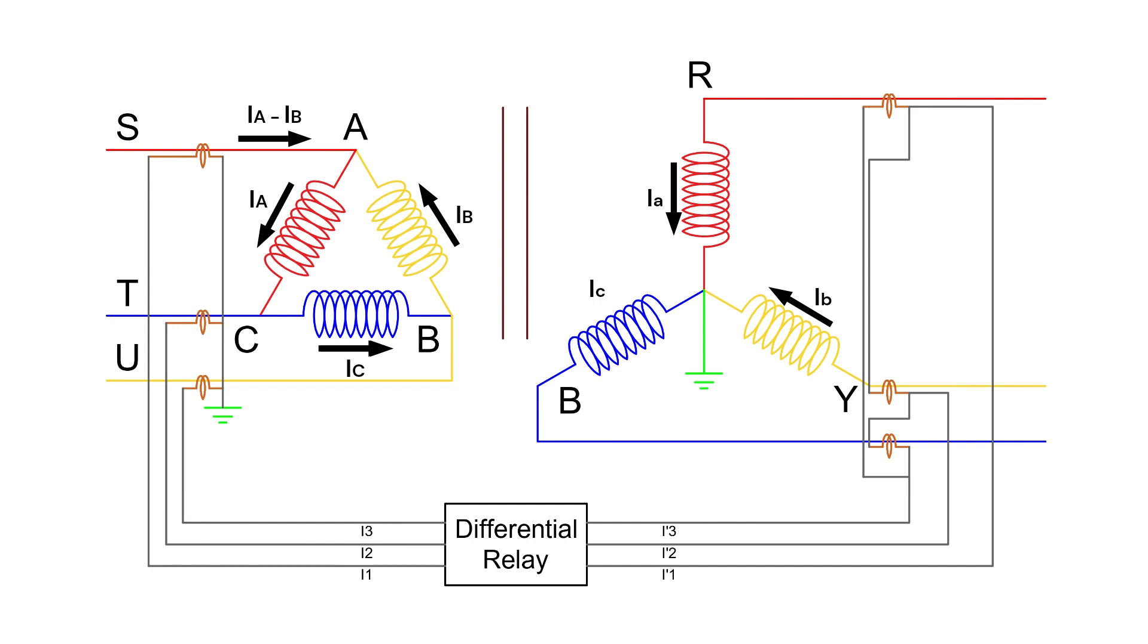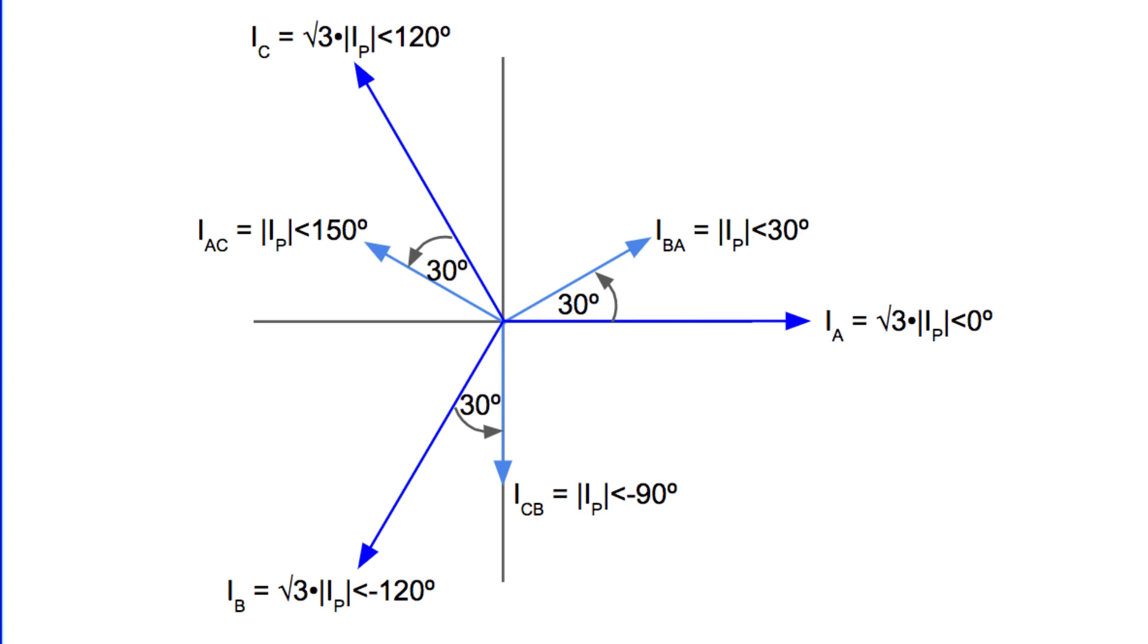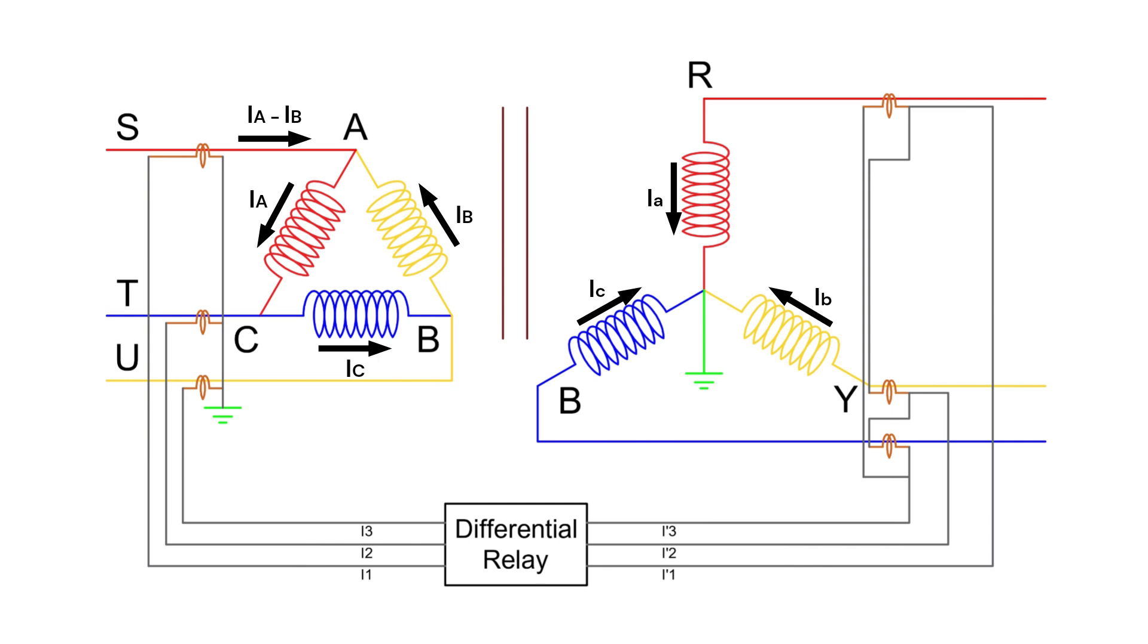Well, in transformer differential protection, phase correction is required due to the 30-degree phase shift between delta and star. To compensate for this, we connect the CTs in a star configuration.